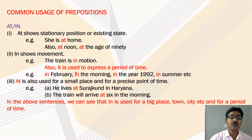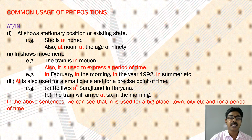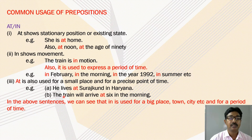'In' is also used to express a period of time. For example: in February, in the morning, in the year 1992, in summer, etc. 'At' is also used for a small place and for a precise point of time. Example: he lives at Sourazganj in Ariana. Second example: the train will arrive at 6 in the morning. Here, 'in' is used for a big place — town, city, etc. — and for a period of time.